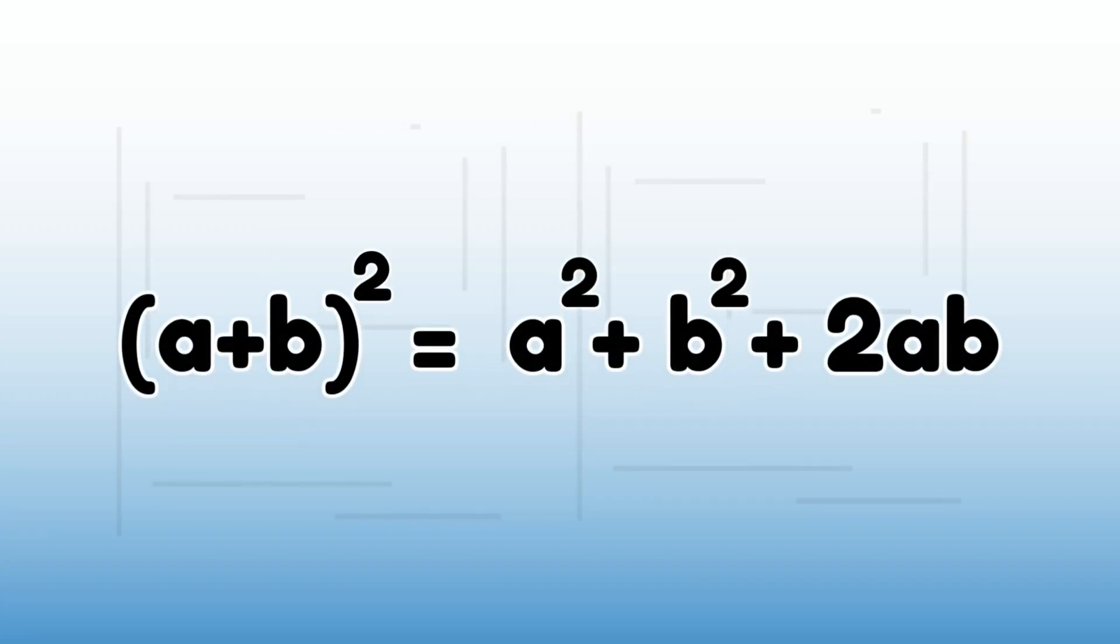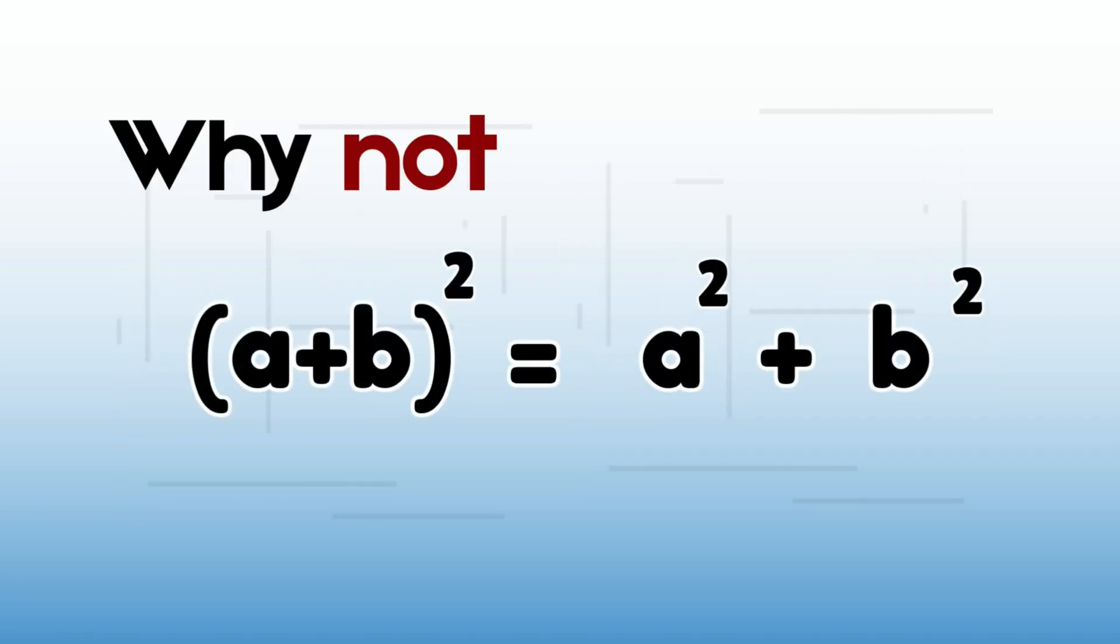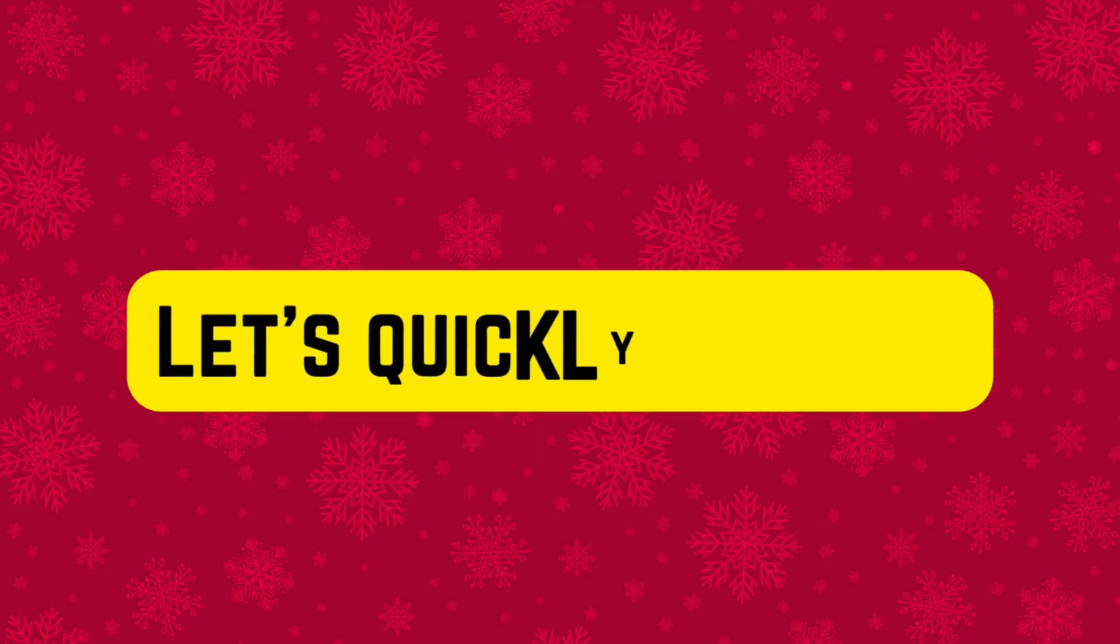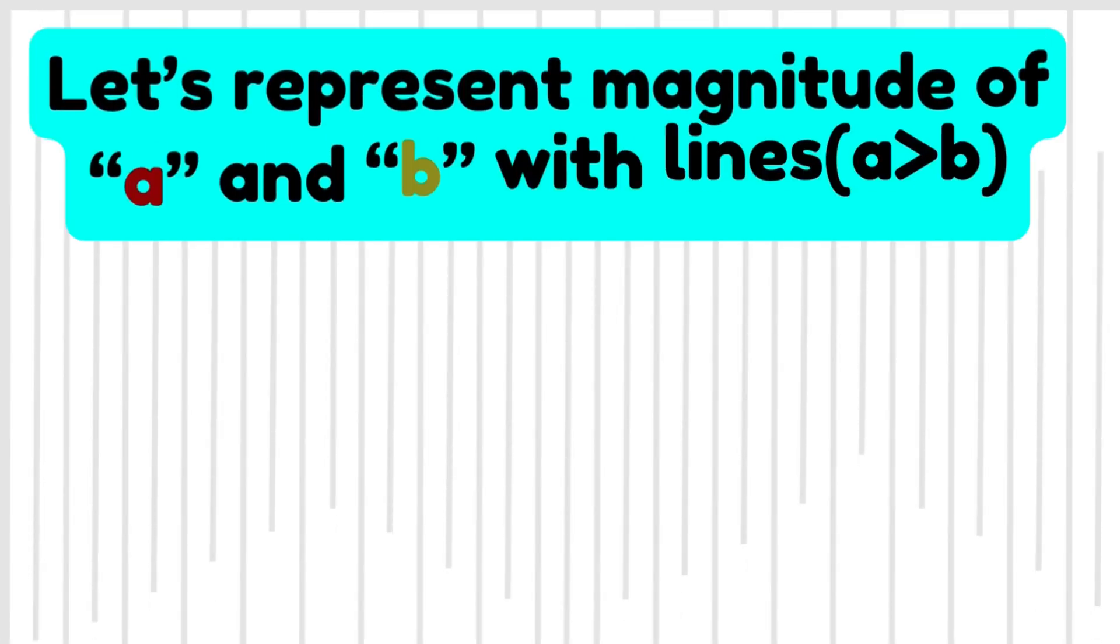a plus b square equals a square plus b square plus 2ab, but why not is it a plus b square equals a square plus b square? Let's find out. Assume a is greater than b, you can take opposite of it as well.